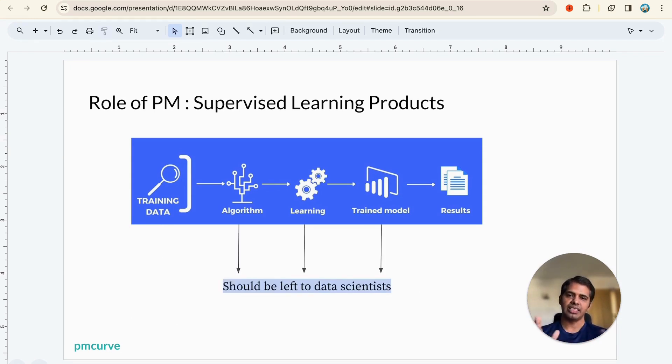The algorithm learning and trained model should be left to data scientists. You don't need to worry too much there because data scientists are good at taking different algorithms, using training data on those algorithms and finally spitting out a good model. As PM, the only thing you need to care about is you should know enough about these algorithms so that when you look at a problem you can gauge whether this is solvable by a particular algorithm or not.